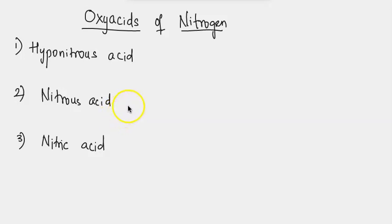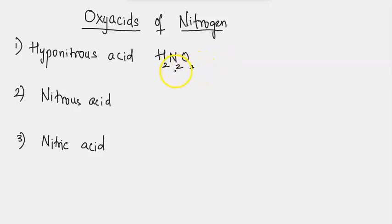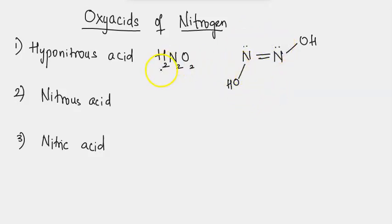Nitrogen can form five different types of oxy acids. The first one is hyponitrous acid with the formula H2N2O2. Two nitrogens are present at the center connected by a double bond (N=N), and each nitrogen is bonded to an OH (hydroxyl) group. Each nitrogen also has a lone pair of electrons. The structure of hyponitrous acid is HO-N=N-OH. This is a dibasic acid.